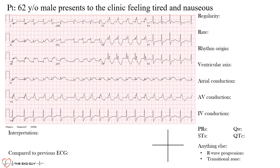Looking at lead V5, one of our rhythm strips, here's the R wave and here's the next R wave. From one R wave to the next, we call that the R-to-R interval. As you can see, these R-to-R intervals are different — most of them are not the same, meaning this is an irregular rhythm. Not only is it irregular, but there is no regularity whatsoever, so we call this an irregularly irregular rhythm.